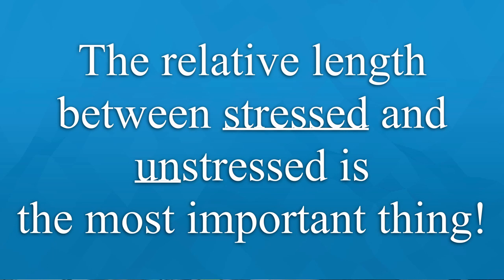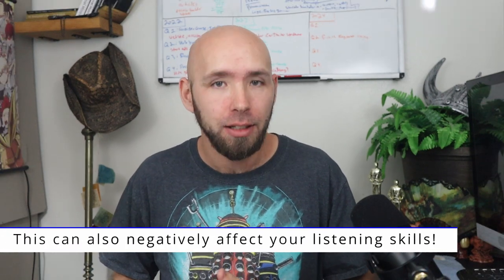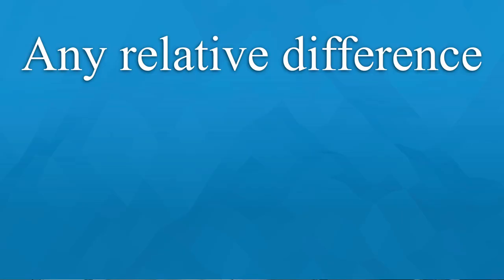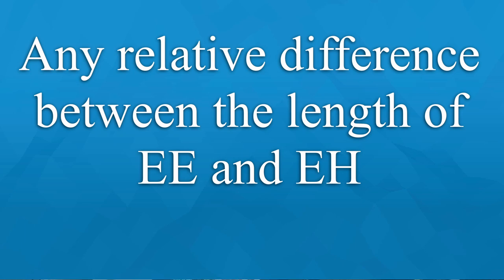The relative length between stressed and unstressed syllables is the most important thing. This first type of vowel length concept tends to cause problems for many English learners because they try to always make the so-called short vowel super short — and you can easily break the rhythm that way. If I say 'set the table,' you don't want to artificially shorten that vowel just because it's labeled short, because it's in a stressed syllable. Any relative difference between E sounds in their length doesn't matter — don't focus on that. It's going to cause problems with your speech and your listening.